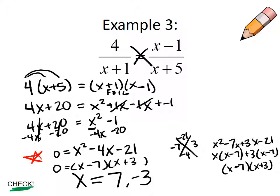We want to check our answers. I'm going to check the 7 first. If I plug in 7 for x, I end up with 4 over 8 equals 6 over 12.